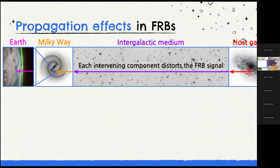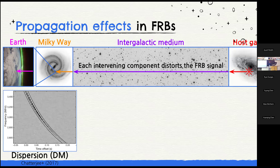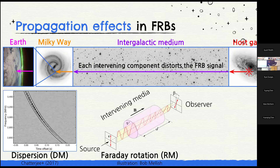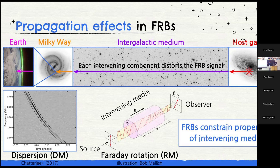FRBs also have interesting propagation paths. A radio signal produced in a host galaxy travels through that galaxy, through the intergalactic medium, into the Milky Way, and even through Earth's ionosphere — each region distorting the FRB signal differently. Dispersion traces the total electron density along the line of sight, useful for studying the intergalactic medium or galaxy halos. FRB signals are also linearly polarized, and the polarization angle rotates as a function of frequency as it passes through magnetized ionized plasma. Measuring this tells us not only the density of components along the line of sight, but also their magnetic field strength. So FRBs are really useful tools — backlit probes of different structures in the universe.